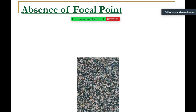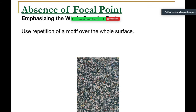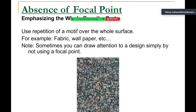We also have the absence of focal point, especially with modernist painters of the 1960s and 70s — like Lee Krasner, who was married to Jackson Pollock. This is called the all-over effect: the design goes from edge to edge, everything is treated in the exact same way, and there is an absence of focal point, creating a repeating motif. You often see this in fabric and wallpaper. You can draw attention to a design simply by not using a focal point, depending on how you treat the surface.